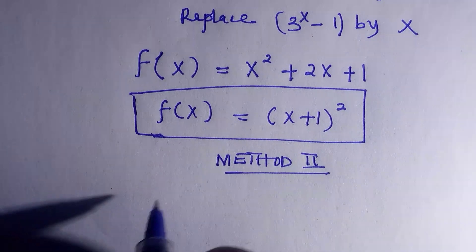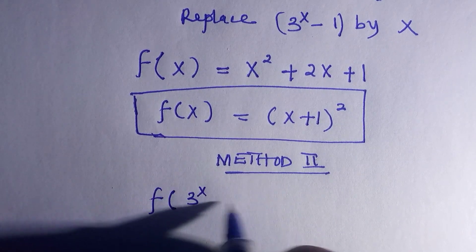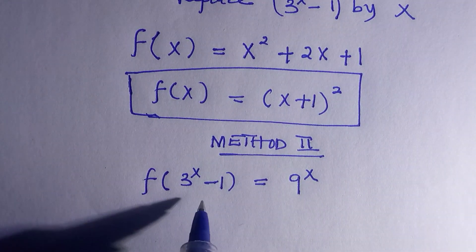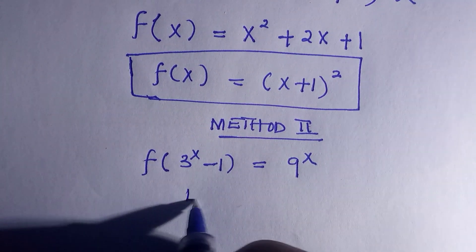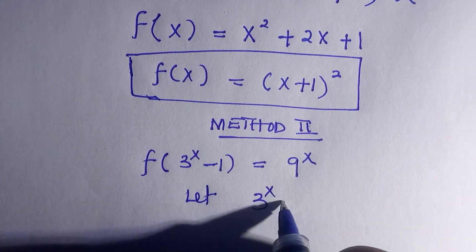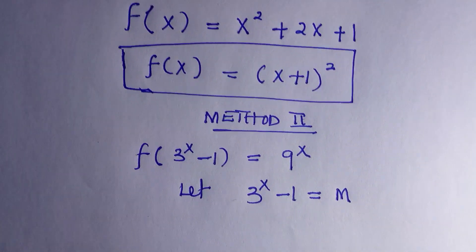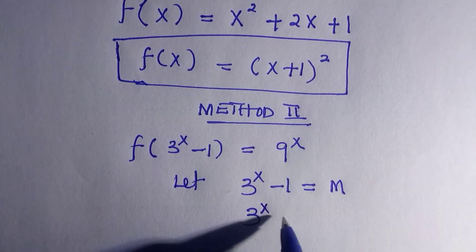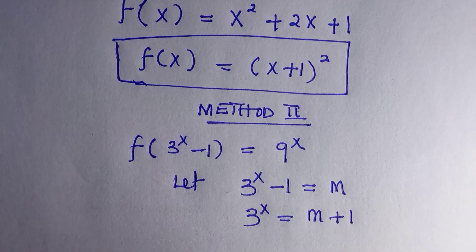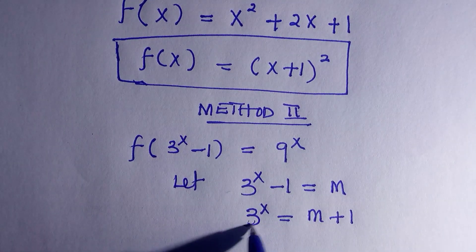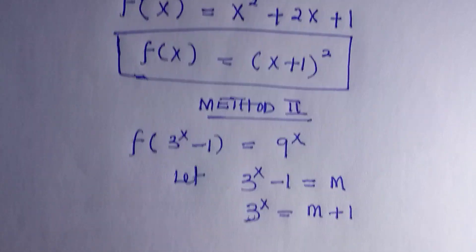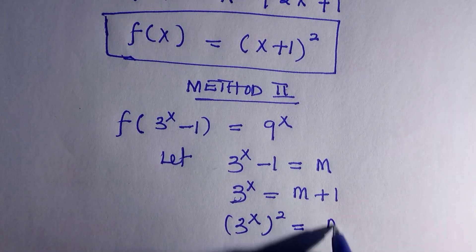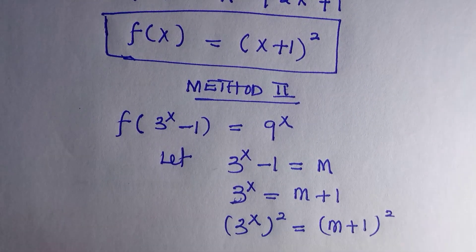Now let's see the second method — this is also beautiful. If you're just joining this channel, like and subscribe. We have f of 3^(x−1) equals 9^x. I'll use a substitution: let m equal 3 to the power of x minus 1. Making 3^x the subject gives 3^x equals m plus 1. Squaring both sides: 3^x squared equals m plus 1, all squared.